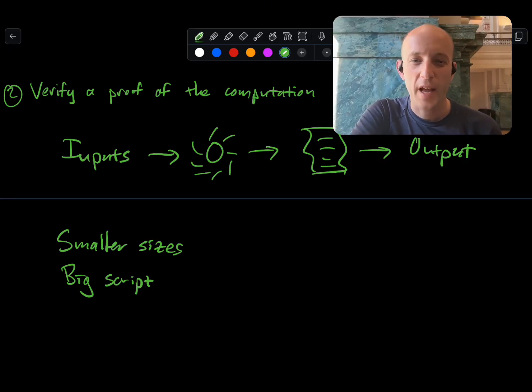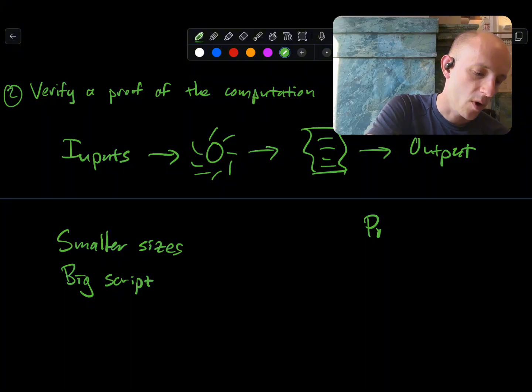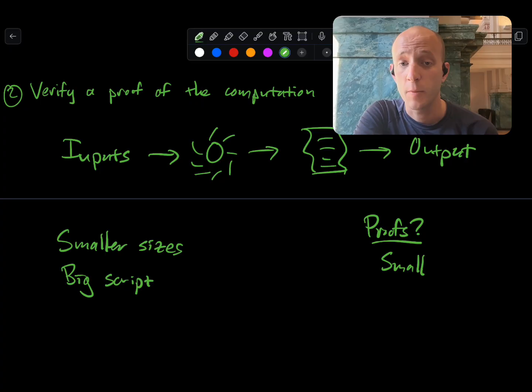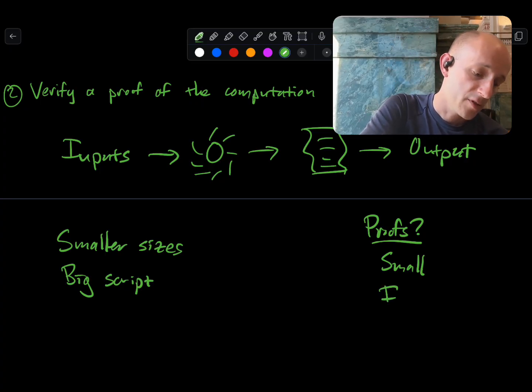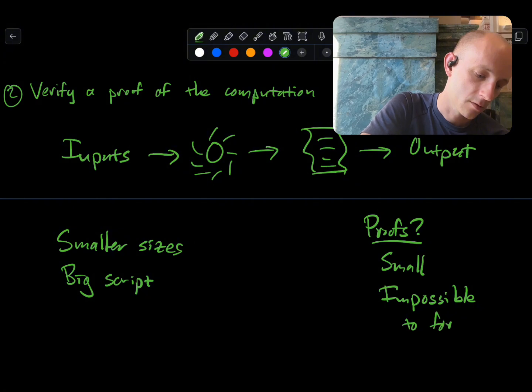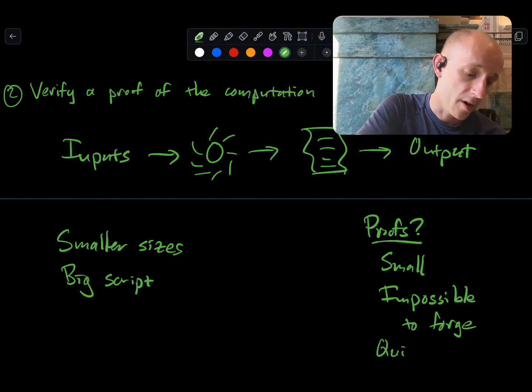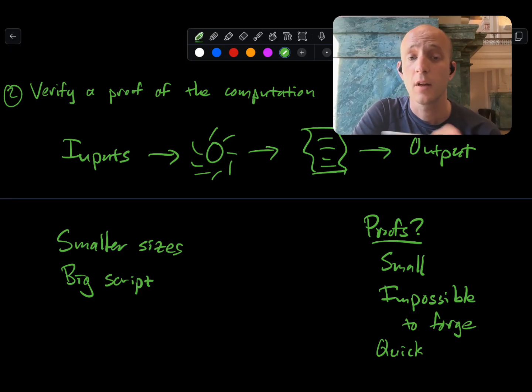So when we talk about proofs, what do they actually need to be able to do? Well, our proofs need to be very small in size because we need to have them appear on-chain. They have to be impossible to forge, so you can't trick the system. And they have to be very quick to check. What kind of proofs do we use? In practice, we use ZK-SNARKs. They happen to be zero-knowledge too.